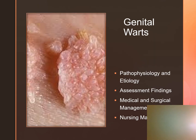Genital warts come from the human papillomavirus, or HPV. It is the most commonly transmitted sexually and is the most common sexually transmitted infection. It can be transmitted genital to genital, genital to anal, or genital to oral contact, in addition to auto-inoculation. It can be transmitted to an infant's respiratory tract during delivery and can cause uterine cervical abnormalities. Many HPV virus mutations — there are about 40 of them — may clear up, but some persistent infections can lead to cancer.